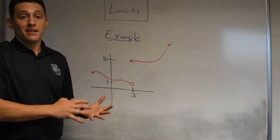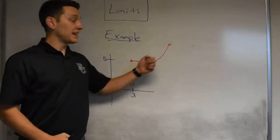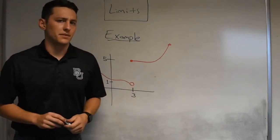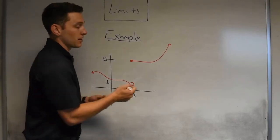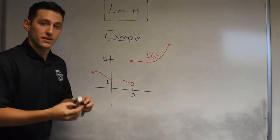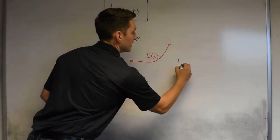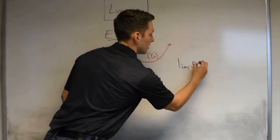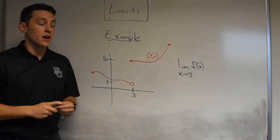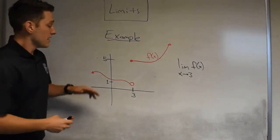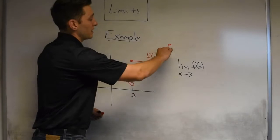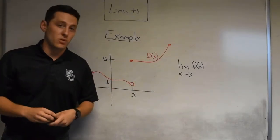Now that we have our basic example of how limits work — estimating from the left hand and right hand side and filling in the dot — let's look at a weirder example. We have a function, let's call it f of x, and I want to ask: find the limit of our function as x approaches 3. How we did it last time is we estimated the y value as we walked from one side and the y value as we walked from the other side, doing this through an xy chart.